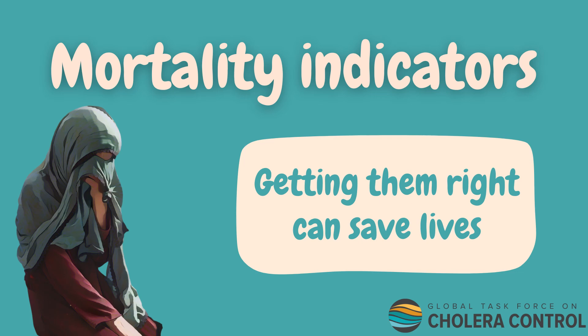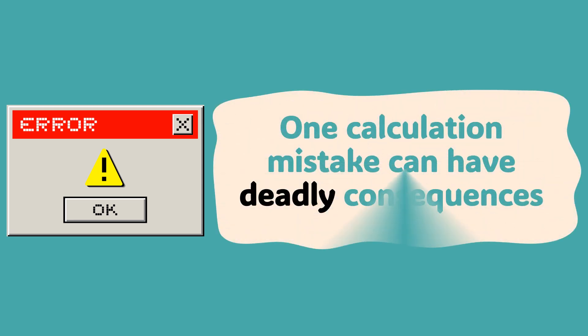When you're in a cholera outbreak, every single number tells a story. But what happens when one of those numbers is actually telling you the wrong story entirely, sending life-saving efforts in completely the wrong direction? We're going to see how one really common calculation mistake can have deadly consequences and how to fix it.